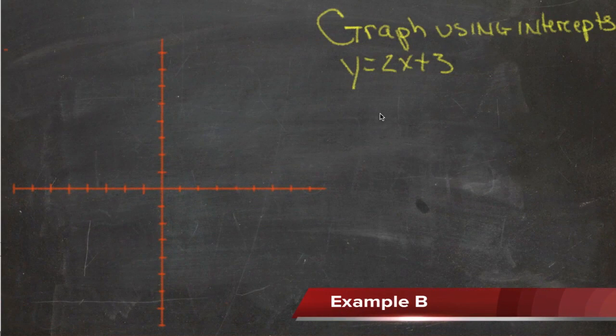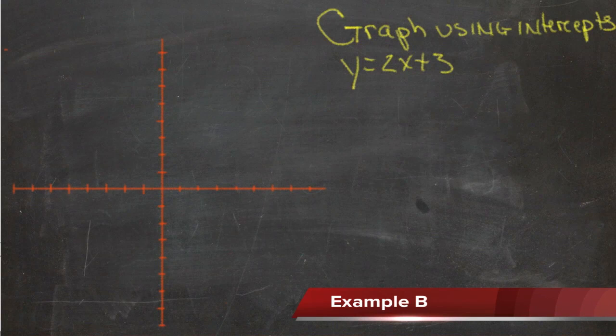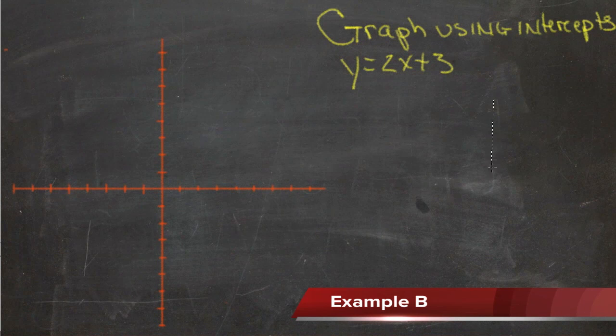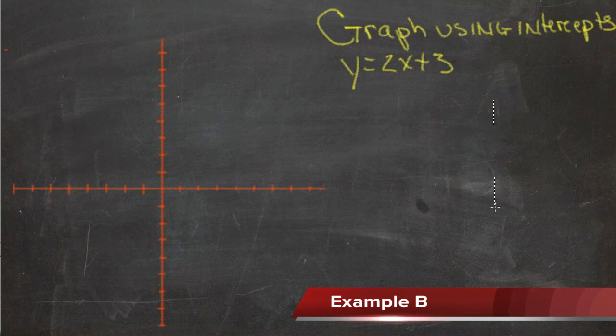Let's do a few more examples of graphing using intercepts here. We'll start with writing out our little xy chart. We know that we need to find out what happens when y is 0, and then find out what happens when x is 0.